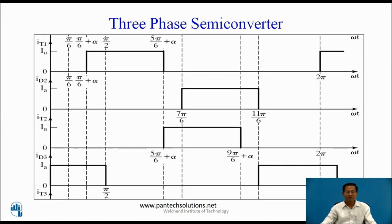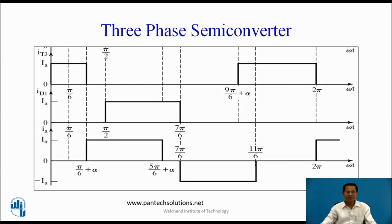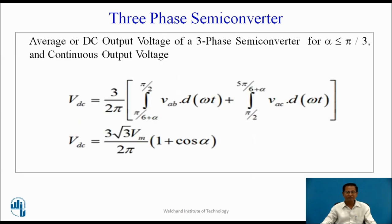These are the current waveforms for iT1, ia, iT3, and phase A. The average or DC output voltage of the three-phase semi-converter for α ≤ π/3 (60 degrees) — this mode is the continuous conduction mode.